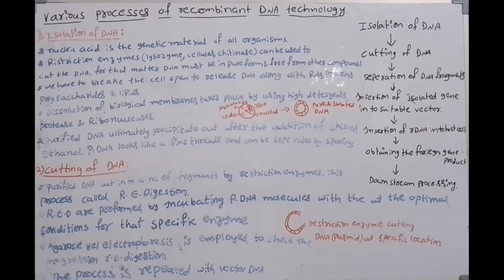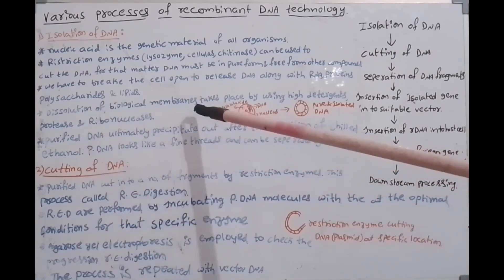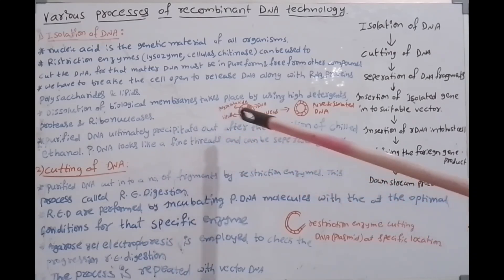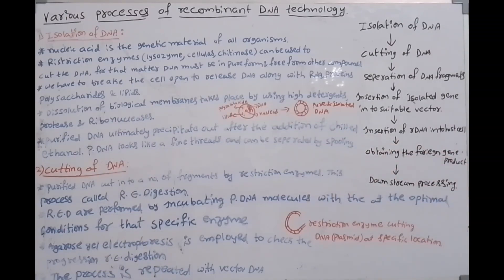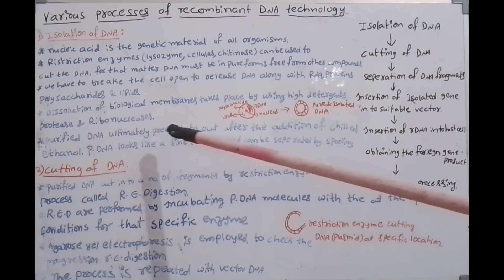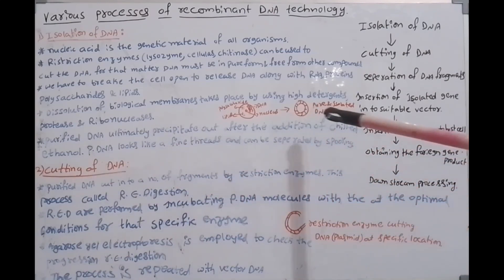In isolation of DNA: first, select the DNA material; next, cut and break the cell open to release DNA along with RNA and proteins. Then, dissolution of biological membranes — cell wall and inner membranes — using high detergents. Finally, the purified DNA ultimately precipitates out after the addition of chilled ethanol.